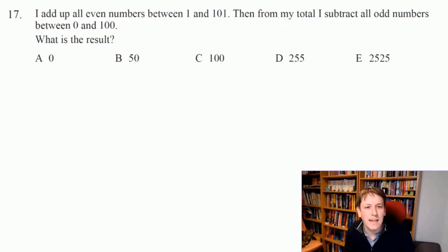Okay, so I'm going to add up all the even numbers between 1 and 101, and then subtract all of the odd numbers between 0 and 100. And so if you actually worked out those totals and subtracted them, this would be quite a hard question. Let's think about what's going on in a slightly better way. So just imagine I've got all these numbers, 98, 99, 100.